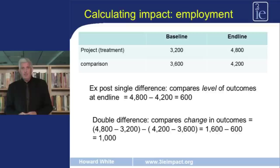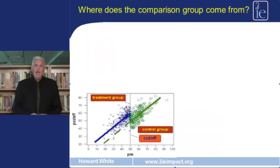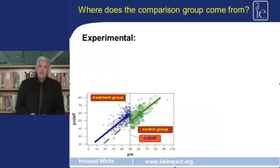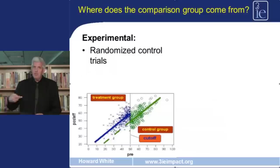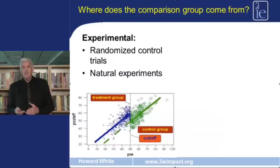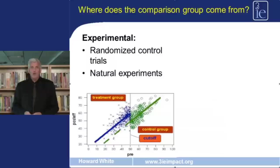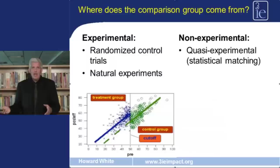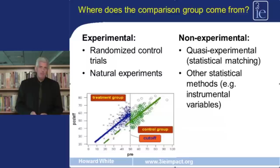It's important to have baseline data and a comparison group. Comparison groups can come from two main categories of methods: experimental methods, which include randomised controlled trials where the programme is randomly assigned to districts, firms, or households, and natural experiments where some law or act of nature acts as if it were random assignment. On the other hand, quasi-experimental methods include statistical matching and other statistically-based approaches such as instrumental variables. Each of these methods will be covered in subsequent lectures.